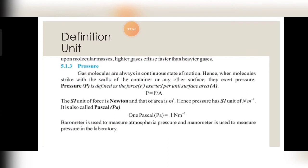Gas molecules are always in a continuous state of motion. When molecules strike the walls of the container or any other surface, they exert pressure. Pressure is defined as the force exerted per unit surface area: P = Force / Area. The SI unit of force is newton and that of area is meter squared, so the SI unit of pressure is newton per meter squared, also called Pascal. One Pascal equals one newton per meter squared.